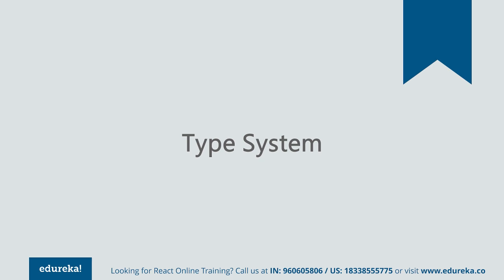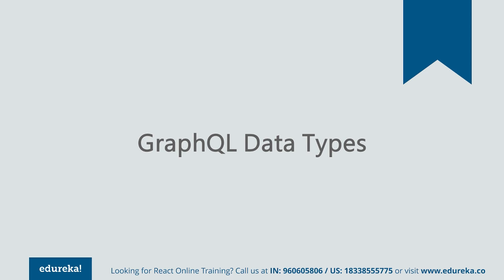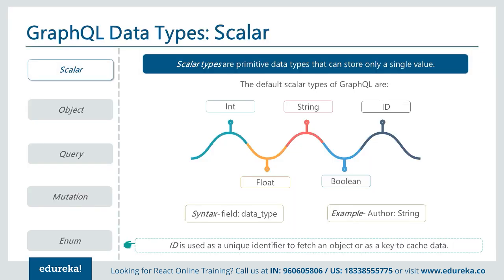What types does GraphQL support? The type system defines various data that can be used in a GraphQL application and adds type safety checks to the program. Validation happens at compile time or during execution. Due to the dynamic nature of JavaScript, a type flag will catch program mishaps and flag possible errors. GraphQL data types include: int, float, string, boolean, and ID.